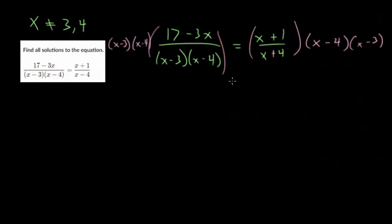Let's cancel things out now. The x minus 3 and x minus 4 will cancel, we just get 17 minus 3x on the left. On the right, the x minus 4s will cancel since something divided by itself is always 1. You'd be left with x plus 1 here and x minus 3 here.